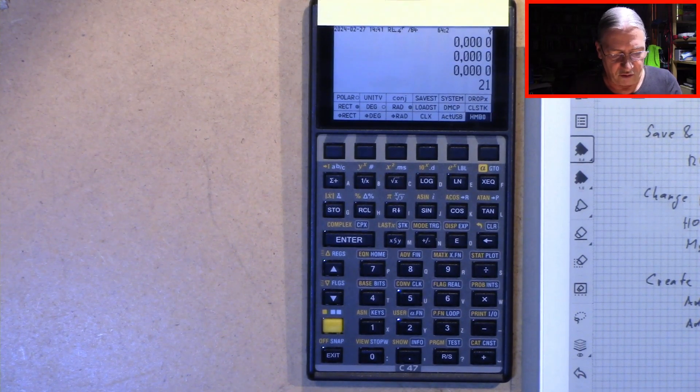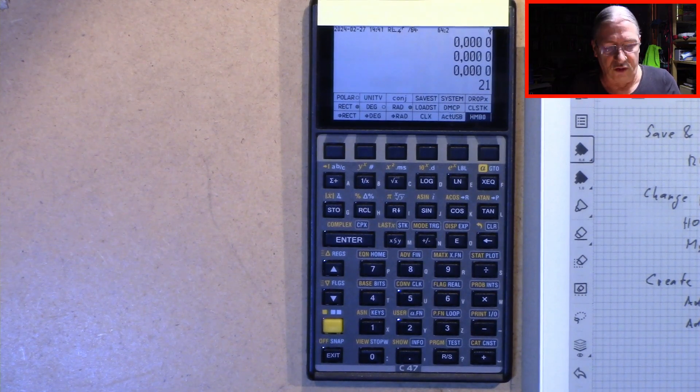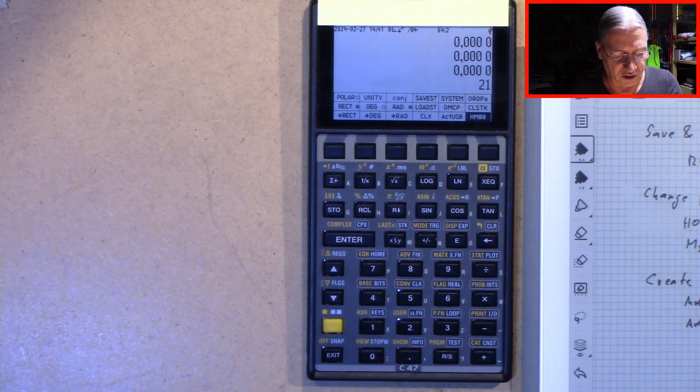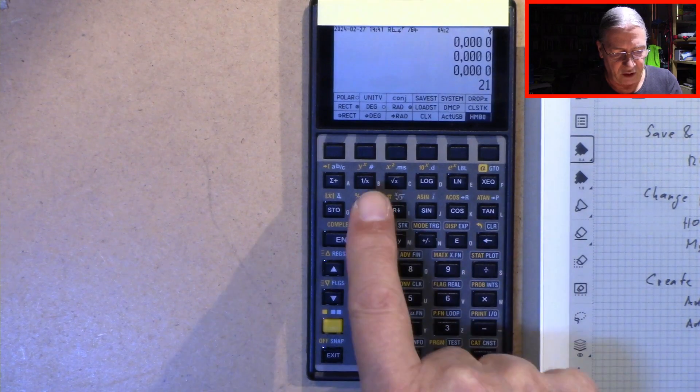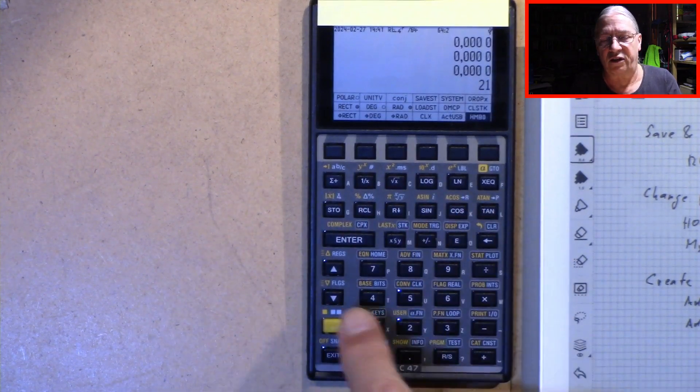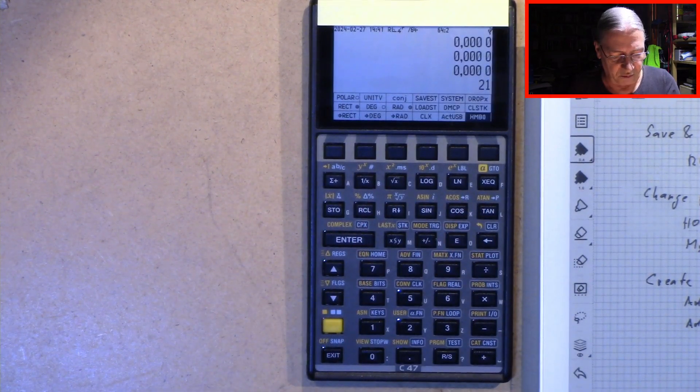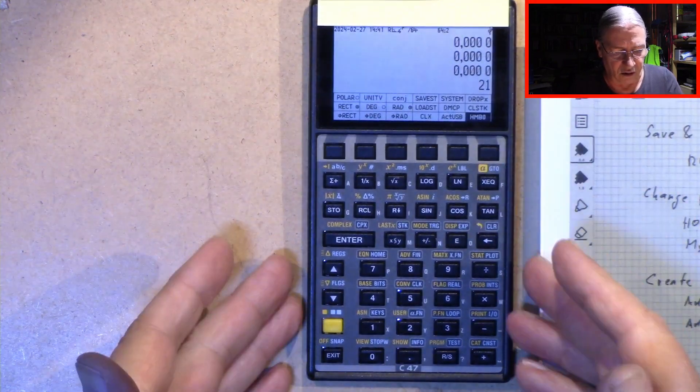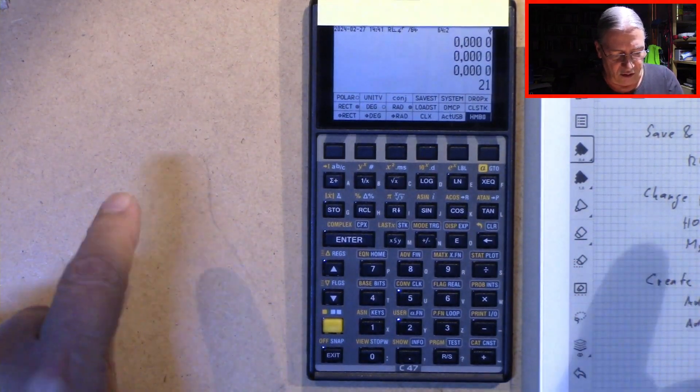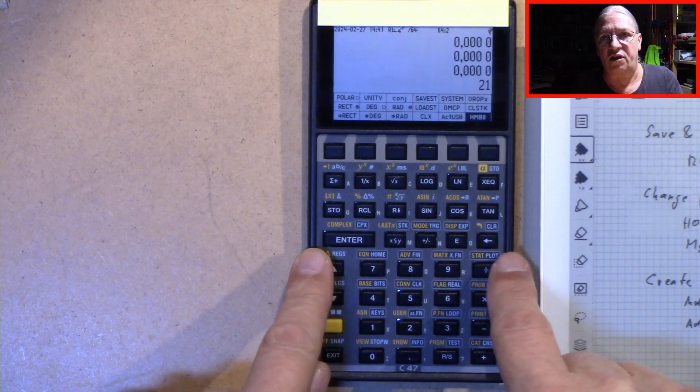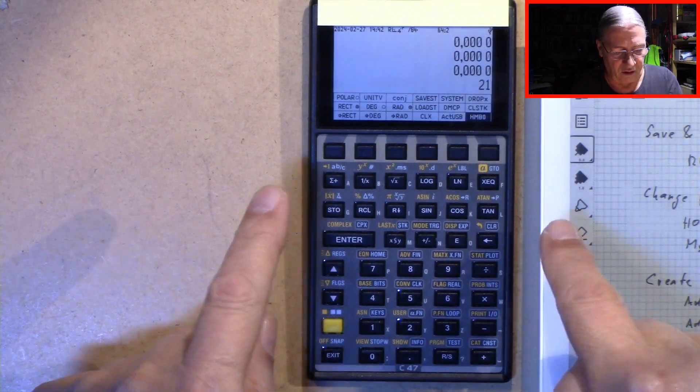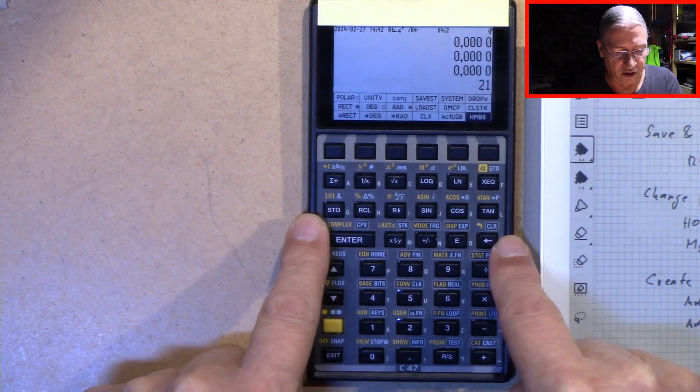So the first thing I do for the video is that I reset my configuration here. So what we see is a DM42 with the C47 software installed and configured.